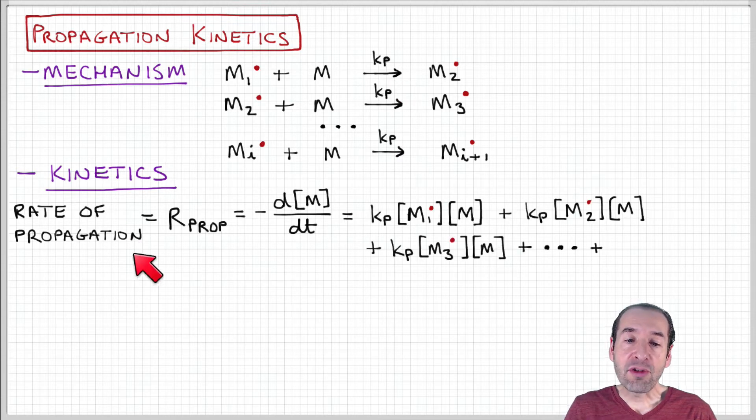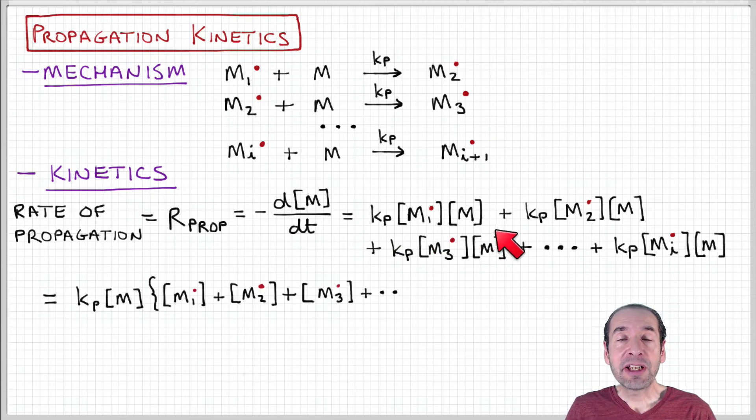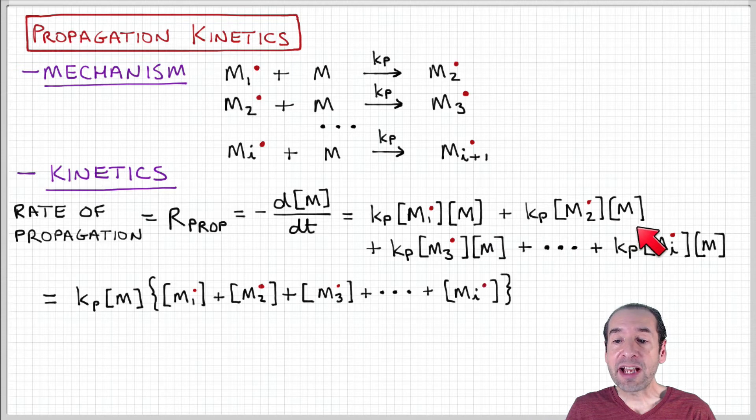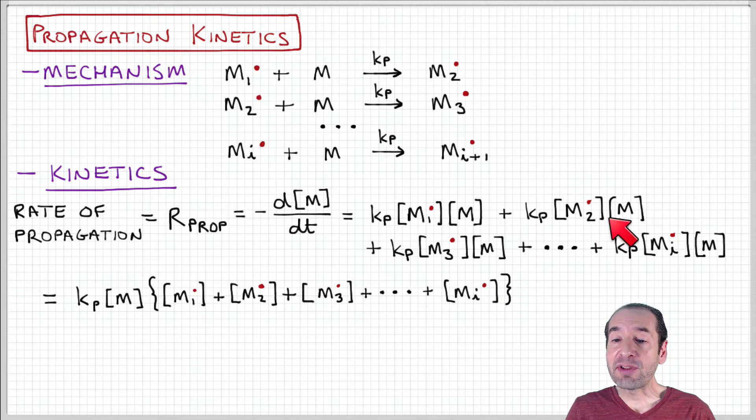We can write an overall rate law for this process in terms of the sum of each of these reactions that are taking place. For example, a one monomer unit active chain adds a second monomer, a two monomer unit active chain adds a monomer, and so forth, up to an I unit long polymer chain adding a monomer.